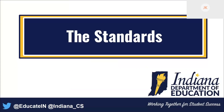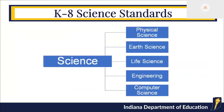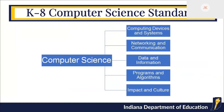Computer science standards are housed within science in K-8. Science is divided into five different strands, one of which is computer science. Computer science is then divided into five separate strands: computing devices and systems, networking and communication, data and information, programs and algorithms, and impact and culture. That's an overview of where the standards fit in the grand scheme of things.